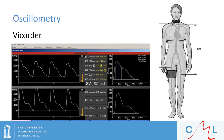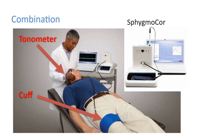With oscillometry, we use cuffs — simply blood pressure cuffs — to detect pressure waves. Here is an example setup for the Vicorder, which is an oscillometric device. Here we also see another device by AtCore called the Xcel, which combines tonometry — the pen-like pressure sensor — as well as the oscillometric component, which is the cuff placed around the thigh. We can also use ultrasound to assess pulse wave velocity, measuring the velocity waveform at proximal and distal sites, gating it to the ECG to determine the transit time.